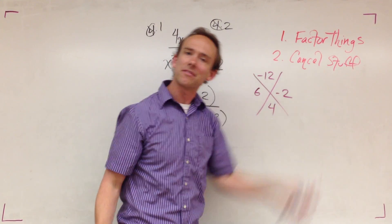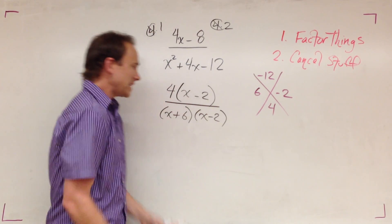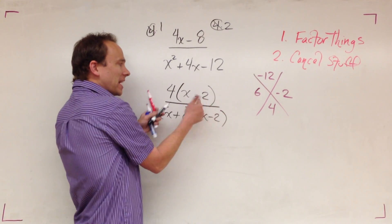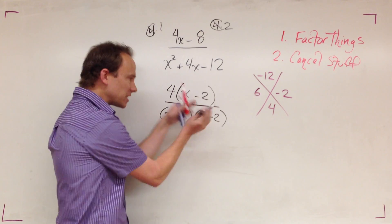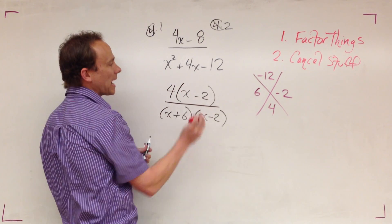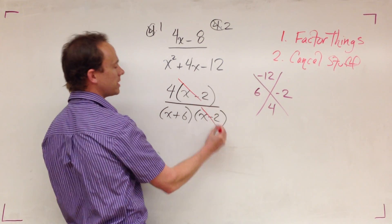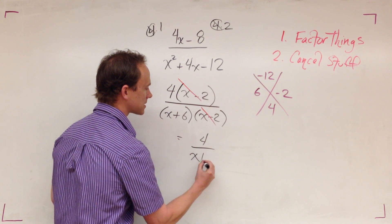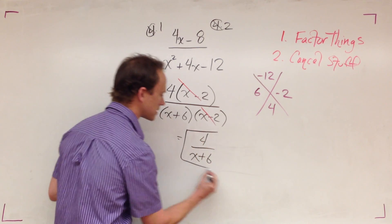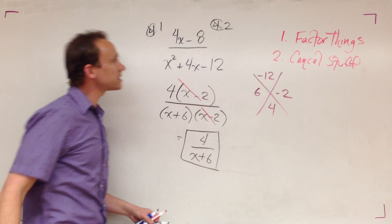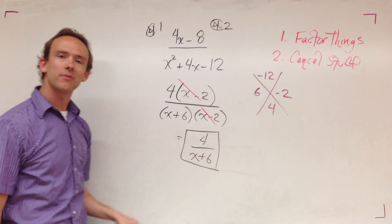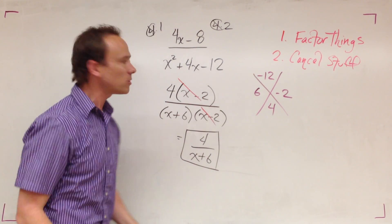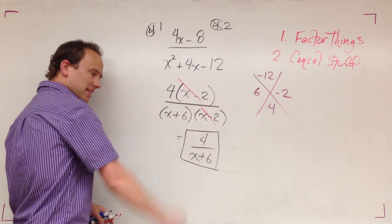I factored things, last thing we got to do is cancel stuff. When you're multiplying dividing by the same quantity then you can cancel. I got an x minus 2, x minus 2, those are canceled. Now we got 4 over x plus 6. That's how we simplified a rational expression.